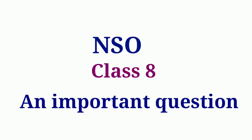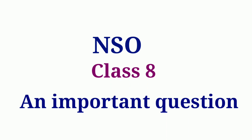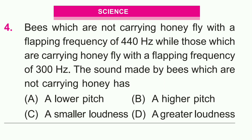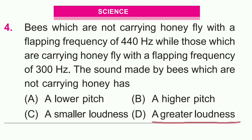Class 8 — this is a very important and conceptual question. Bees which are not carrying honey fly with a flapping frequency of 440 hertz, while those which are carrying honey fly with a flapping frequency of 300 hertz. The sound made by bees which are not carrying honey has — options are: A) lower pitch, B) higher pitch, C) smaller loudness, D) greater loudness.